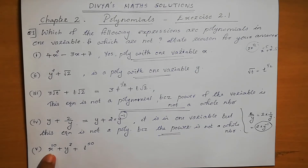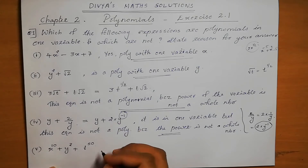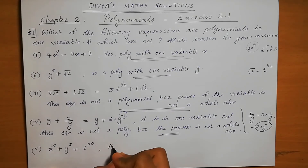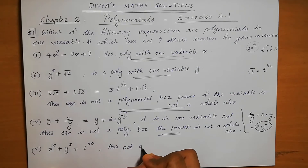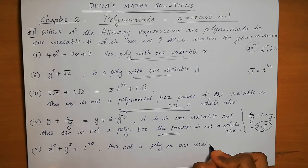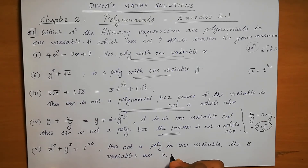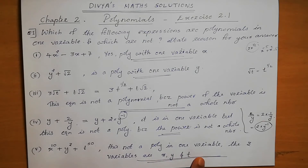Question number 5: x power 10 plus y cubed plus t power 50. This is a polynomial because the powers are whole numbers. But it is not a polynomial in one variable because there are three variables: x, y, and t. It is a polynomial, but it contains three variables, so it is not a polynomial in one variable.